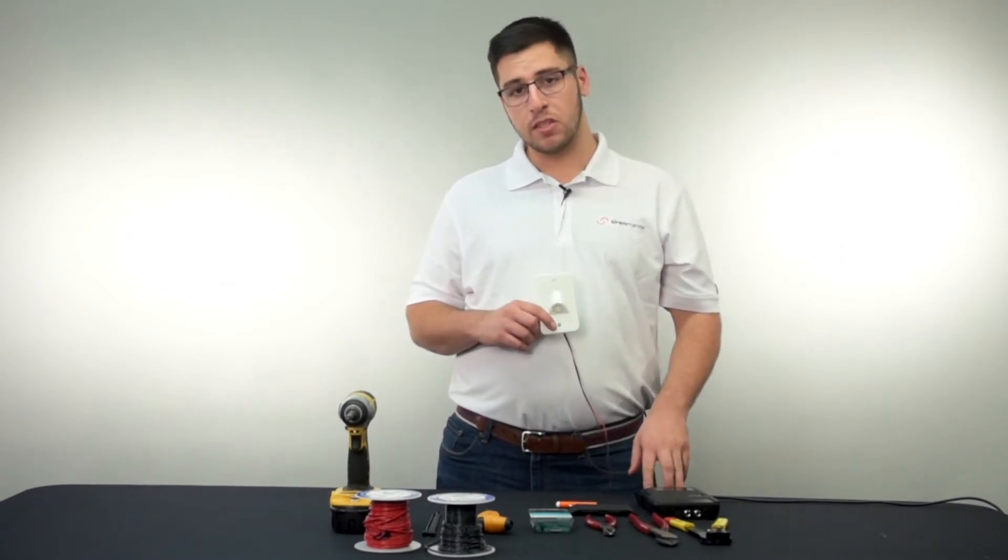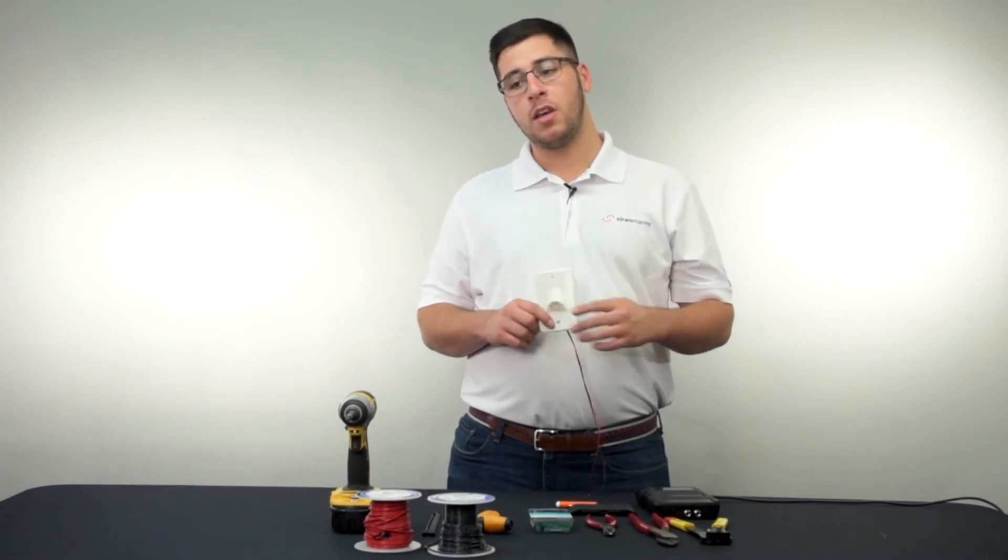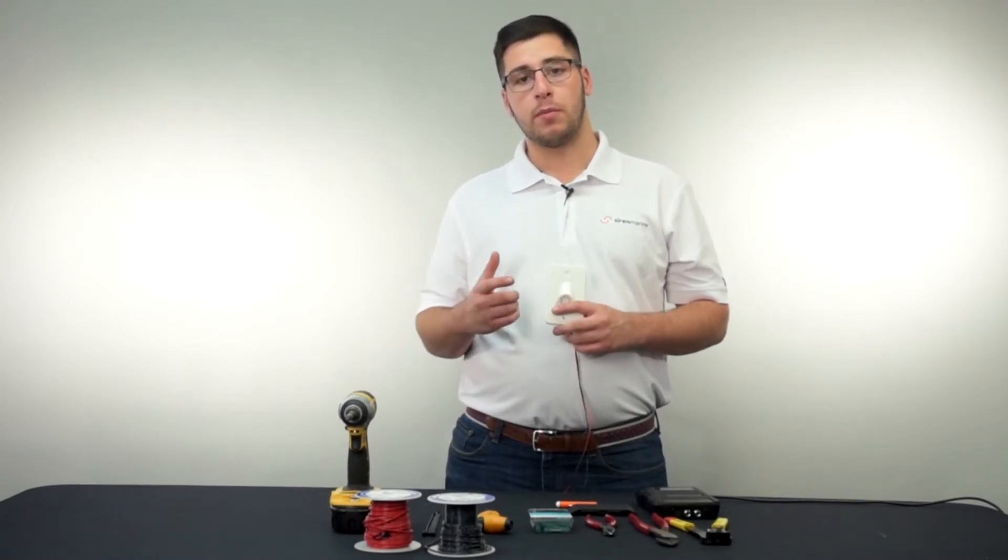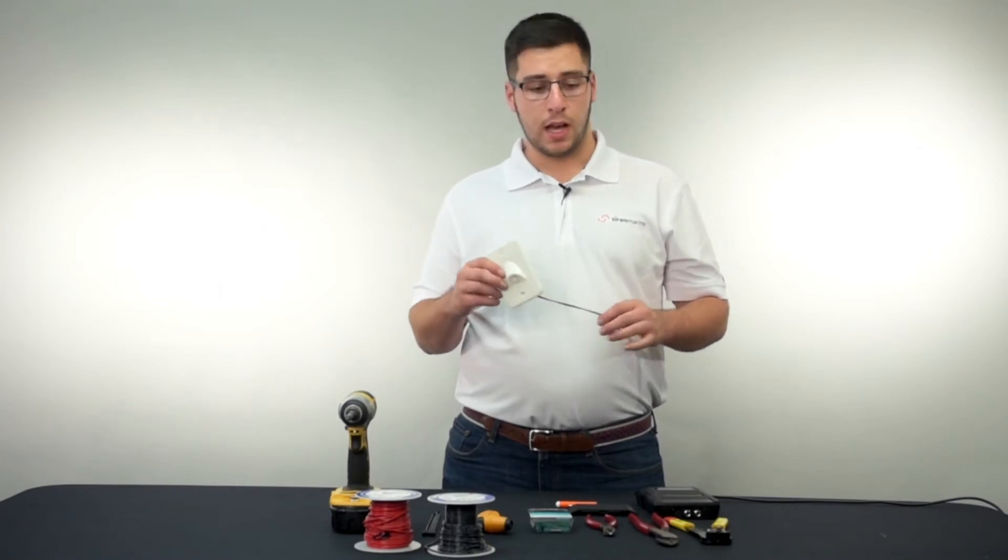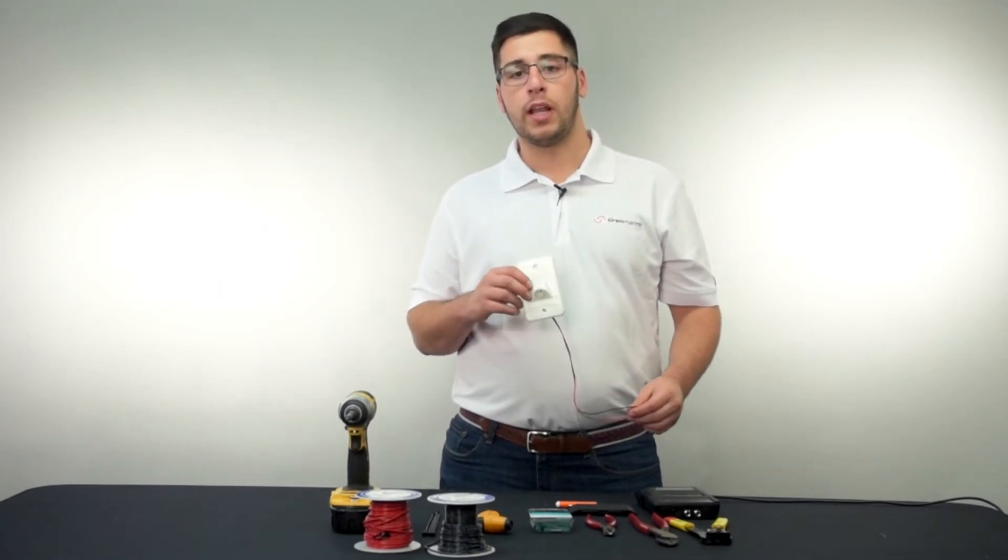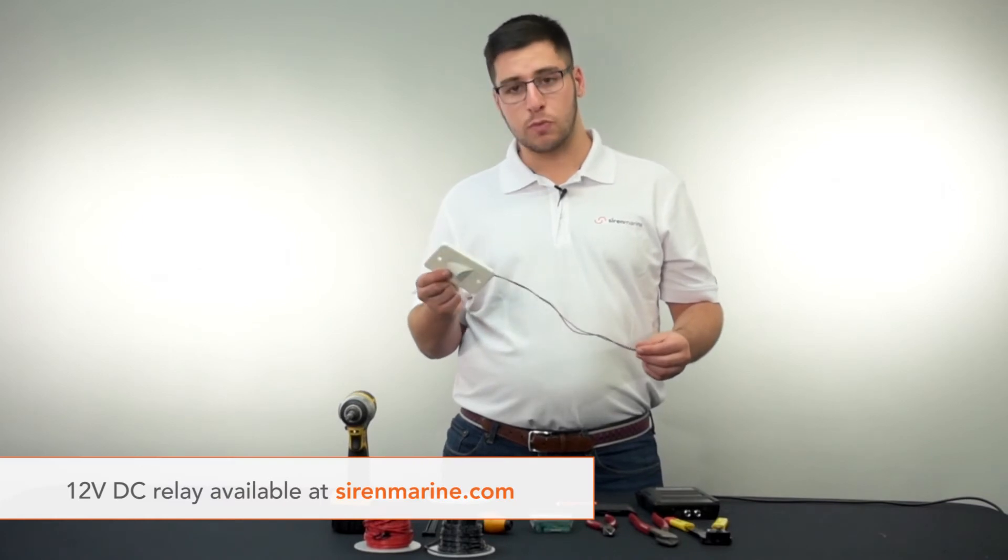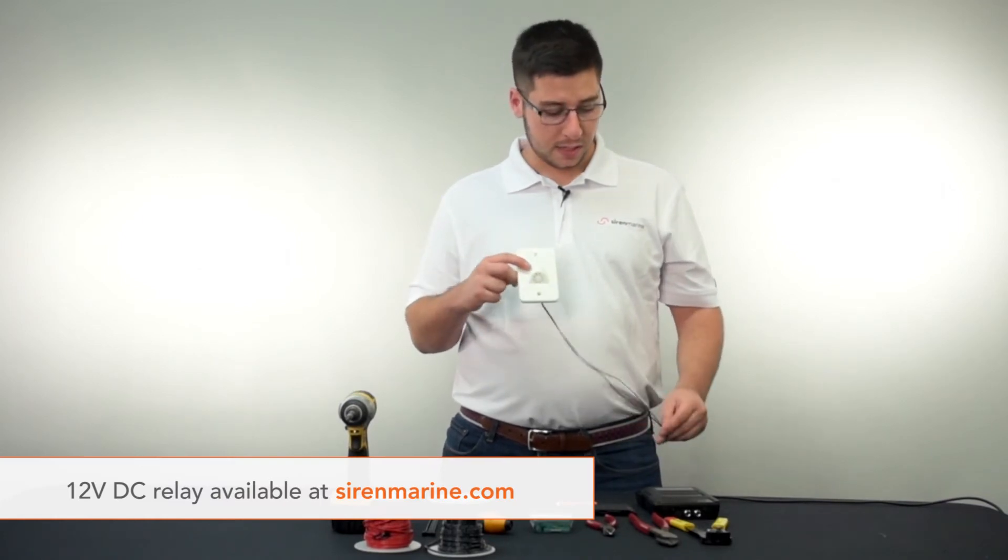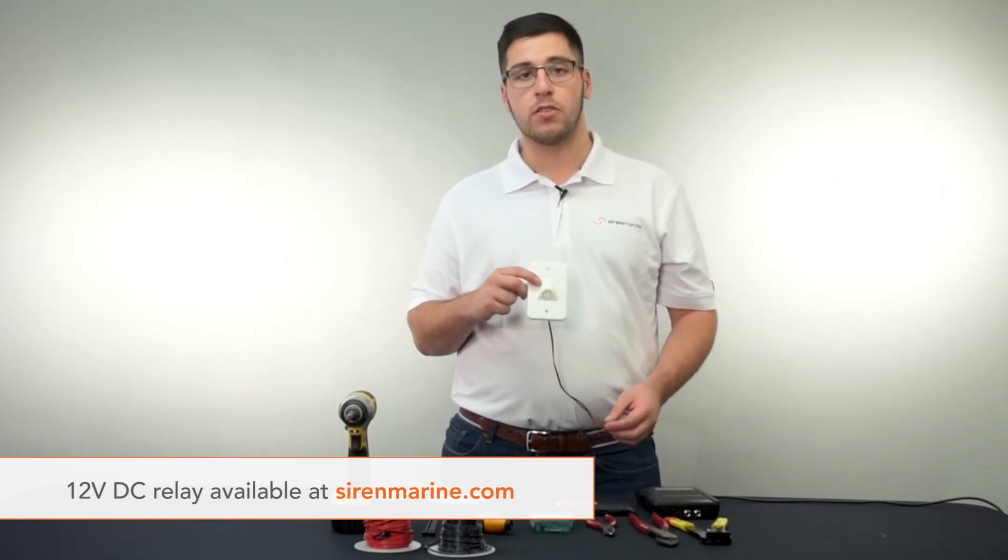The outputs on the MTC do have a max rating of about 1 amp, so if you are trying to throw a bigger switch, maybe like your air conditioner or your refrigerator, your live well pump, you will need an external 12-volt relay. For this application, this is a small siren, this is acceptable to be attached directly into the output.